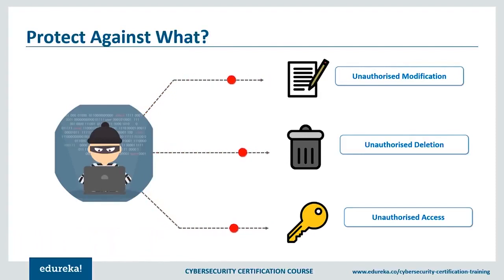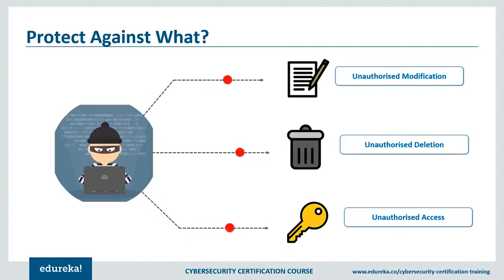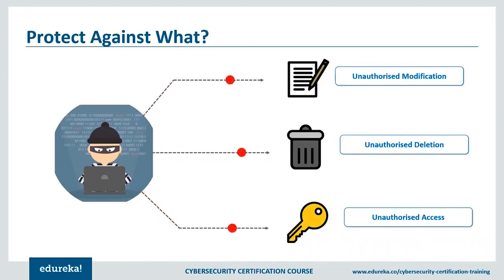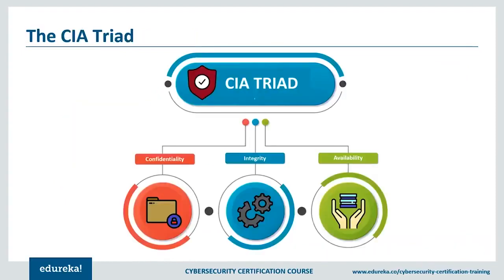For example, end-user protection defends information and guards against loss or theft, while also scanning computers for malicious code. When talking about cyber security, there are three main activities we are trying to protect against: unauthorized modification, unauthorized deletion, and unauthorized access. These three terms are synonymous with the CIA triad — Confidentiality, Integrity, and Availability — which is commonly referred to as the three pillars of security, and most security policies of organizations are based on these three principles.